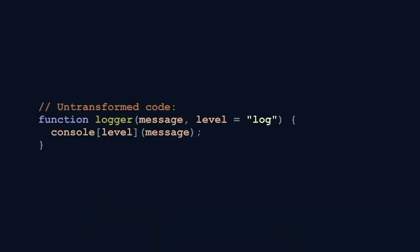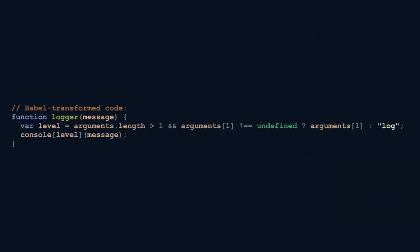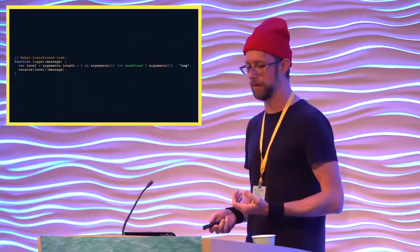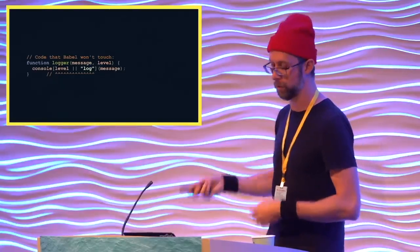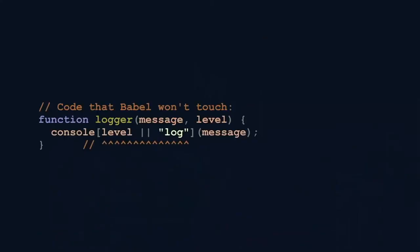Here's a simple console logging wrapper function that accepts message and level parameters, where the second parameter has a default of 'log'. Default parameters are nice, but Babel transforms them very inefficiently, and it repeats that inefficient transform every time the default parameter is used — passing that developer experience cost on to the user. We can avoid this specific transform by replacing the default parameter with an OR check: the left side is the parameter itself, the right side is the default. If the level parameter is omitted, the right side is used — and Babel will not touch this.